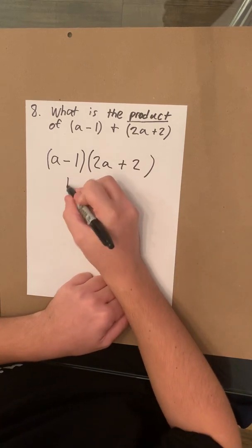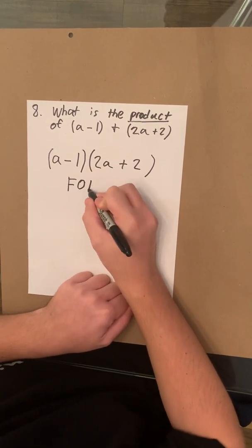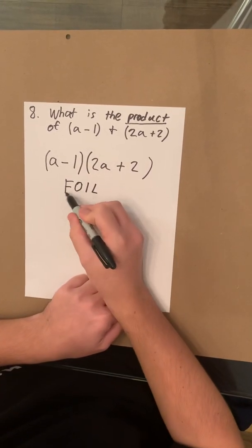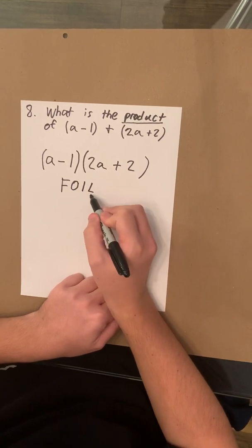And we're going to be using what's called FOIL. It stands for First, Outer, Inner, Last.